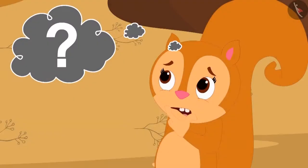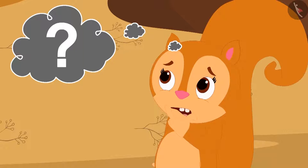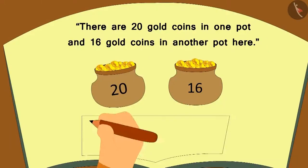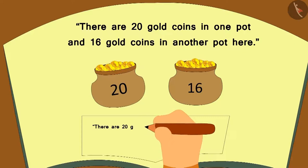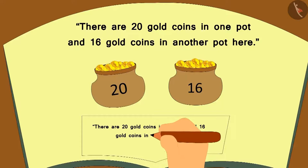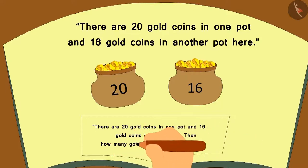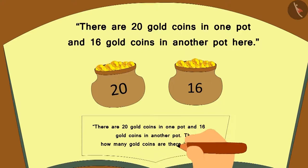After thinking for a while, Chanda wrote down a question there. There are 20 gold coins in one pot and 16 gold coins in another pot. Then how many gold coins are there in total?